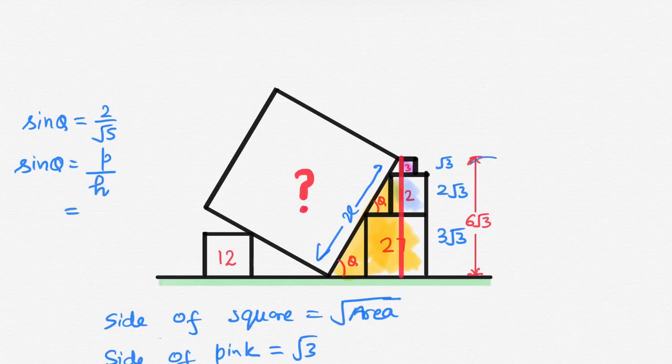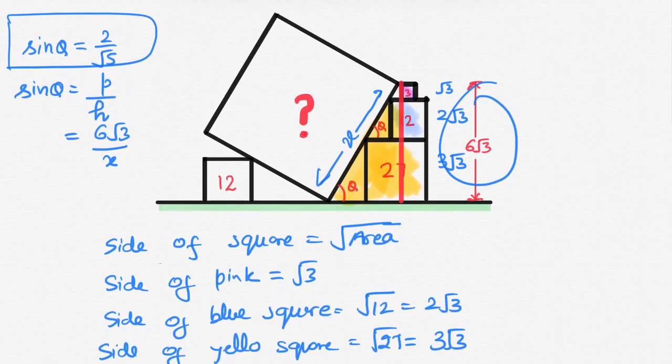So, perpendicular is 6 root 3 and hypotenuse is x. And you know the value of sin theta. Sin theta is 2 over root 5. So, putting the value of sin theta here, 2 over root 5.